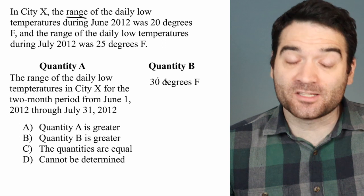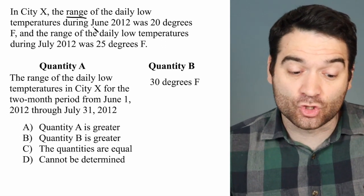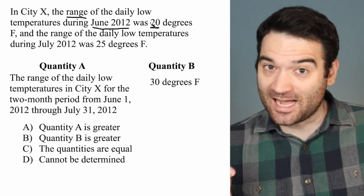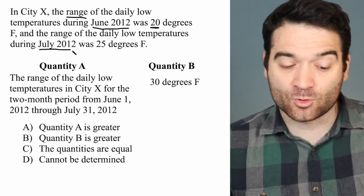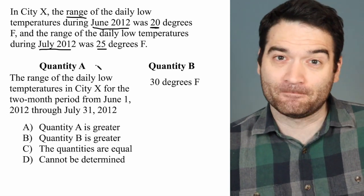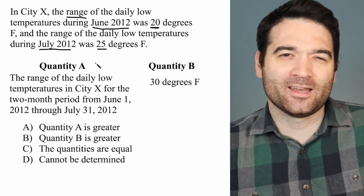So here we basically have two data sets. We have June 2012, which has a range of 20 degrees—that means highest minus lowest is 20 degrees. And we have July 2012, which has a range of 25 degrees Fahrenheit. Highest minus lowest is 25.